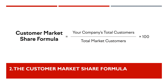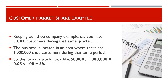In some cases, you might measure market share by the number of customers instead. This is usually the preferred method for more prominent industries, which tend to have these figures readily available. In this case, you trade sales for customers to get a similar percentage amount. Keeping our shoe company example, say you have 50,000 customers during that same quarter. The business is located in an area where there are 1 million shoe customers during that same period. So the formula would look like: 50,000 divided by 1 million, which equals 0.05, multiplied by 100, which equals 5%.